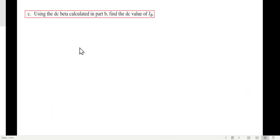And now part C: Using the DC beta calculated in part B, find the DC value of IB. So now we are going to find the exact value of IB, and for that we will use the equation that we have derived from the left loop or the base emitter loop. This beta we have calculated in the last slide. This is what we have derived from the base emitter loop, so we'll use this value.